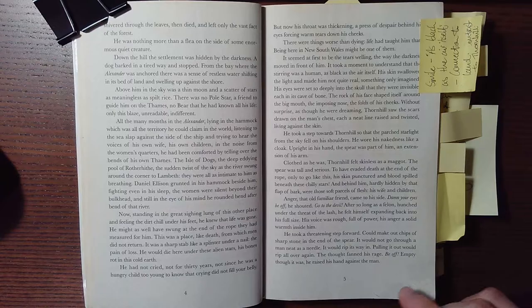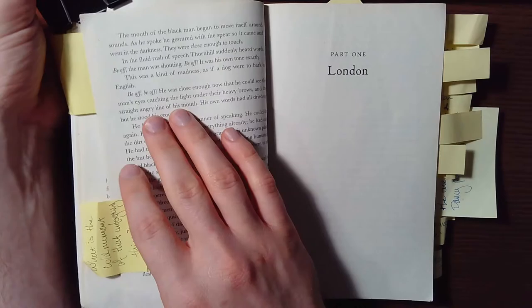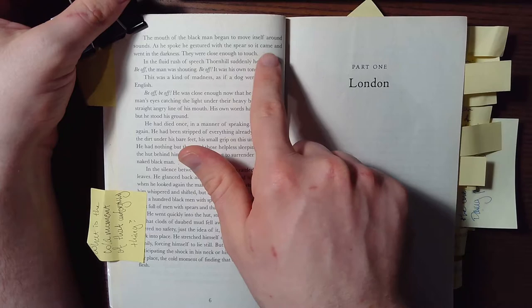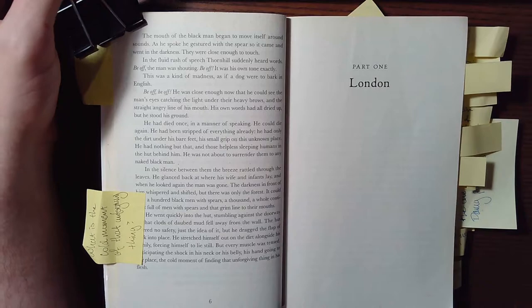So he has this conflict with an Aboriginal man, go to the devil, right? He's very aggressive towards him, and his voice conquers this chapter, and the novel on a whole. The mouth of the black man began to move itself around sounds. As he spoke, he gestured with the spear, so it came and went into the darkness they were close enough to touch.